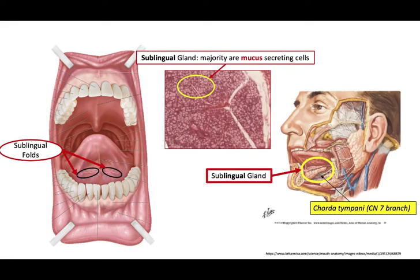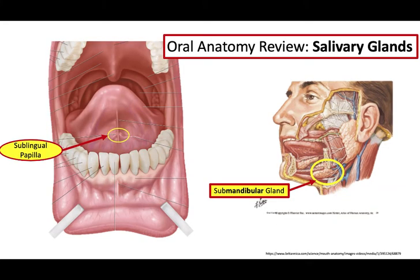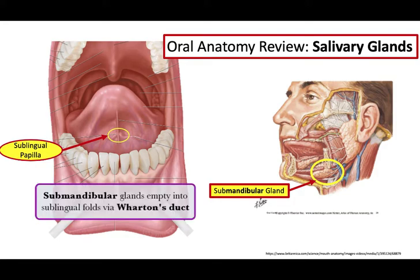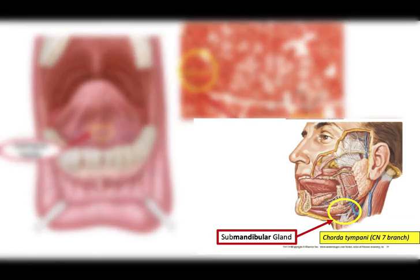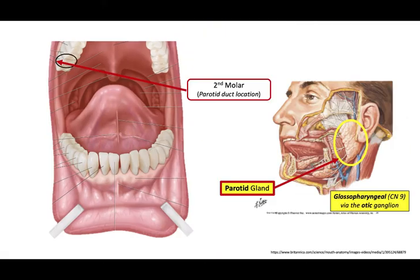The sublingual gland is innervated by the chorda tympani, a branch of the 7th cranial nerve or facial nerve. Moving to the submandibular gland, you will note the openings on either side of the base of the lingual frenulum — these are the sublingual papillae, also referred to as Wharton's duct, found in the sublingual folds. The submandibular gland consists largely of serous cells but does contain some mucus-secreting cells. Like the sublingual gland, the submandibular gland is also innervated by the chorda tympani branch of the facial nerve.